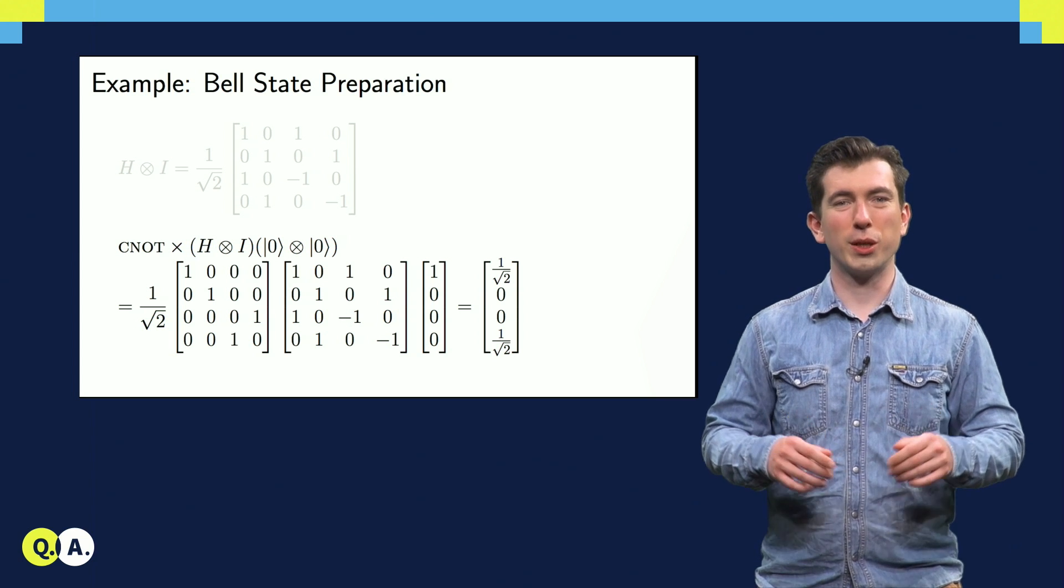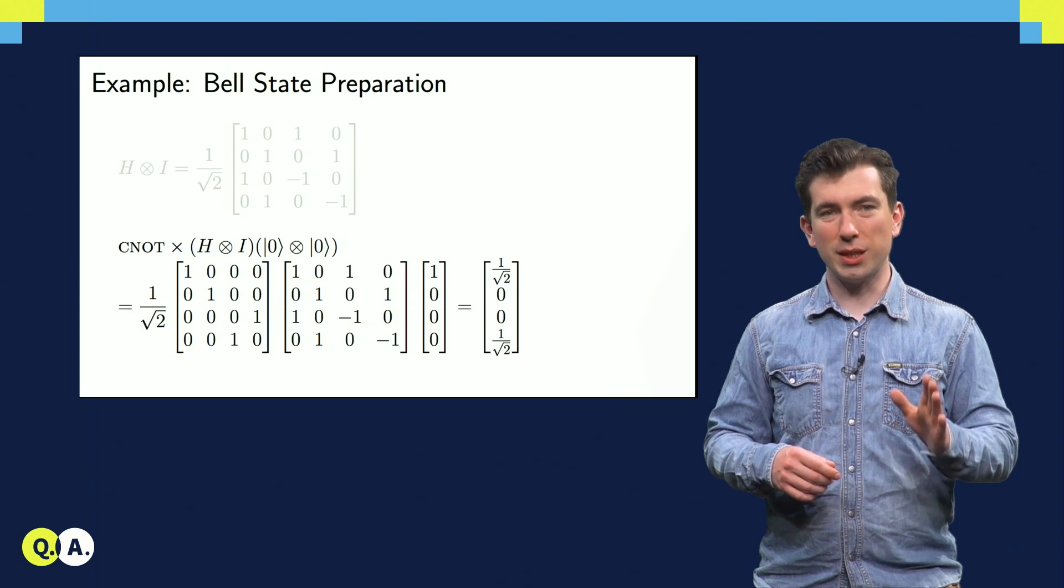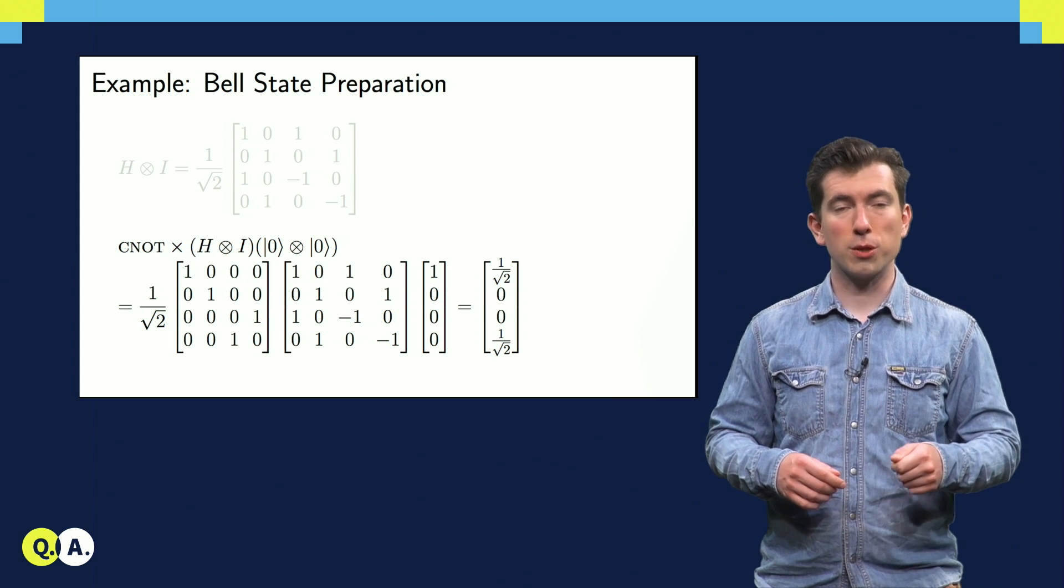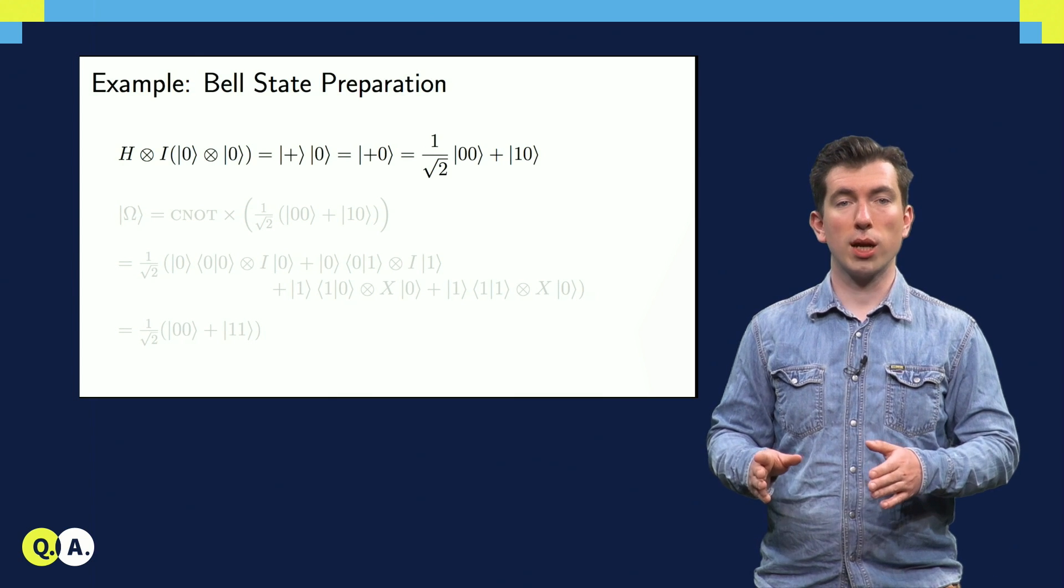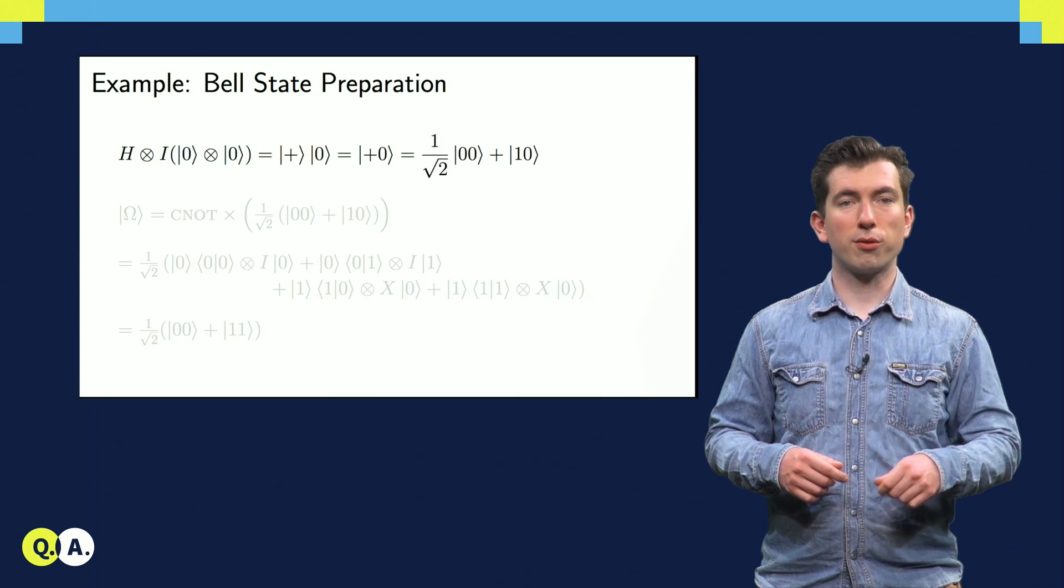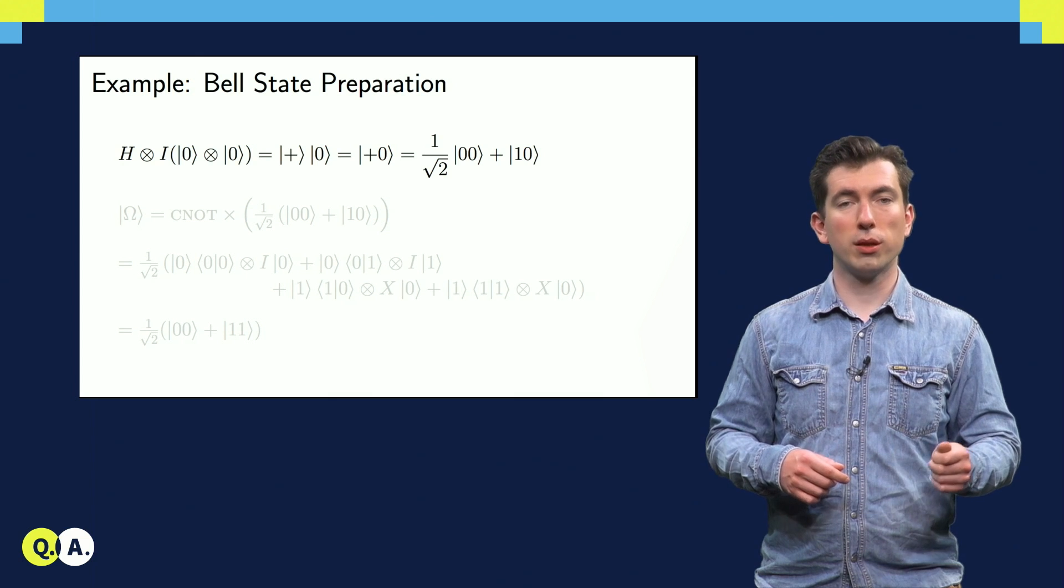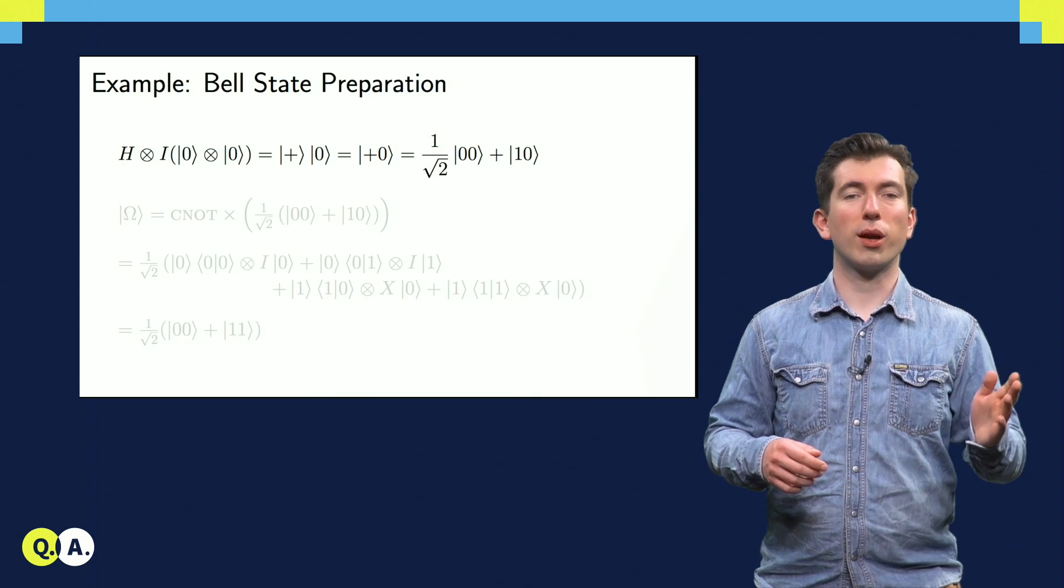Let's try and do it the easy way, using some more ket notation. First, we use the compatibility of the Kronecker and regular products to show that the state we get from executing the Hadamard on the first qubit is simply plus 0 without having to use any matrices.